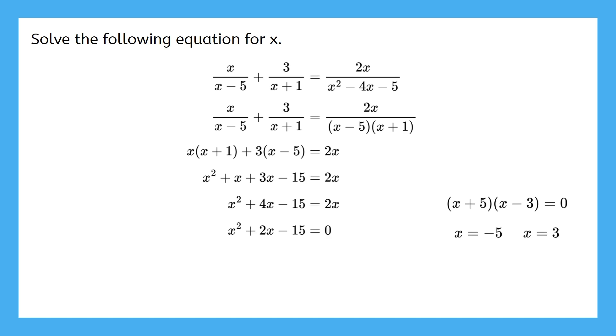Can you check for extraneous solutions before we finalize the answer? If you haven't already, pause the video and check both negative 5 and 3 to see if either of them are extraneous. All right. If we substitute negative 5 into the first denominator, we get negative 10. The second denominator, we get negative 4. And then the third denominator, we get 40. None of those ended up as zero, so negative 5 is a solution. Then we have to check 3. It gives us negative 2 in the first denominator, 4 in the second denominator, and negative 8 in the last one. None of these was equal to zero either, so we have two solutions this time.